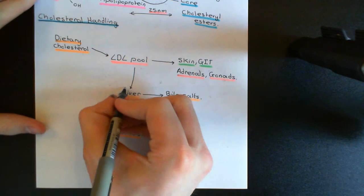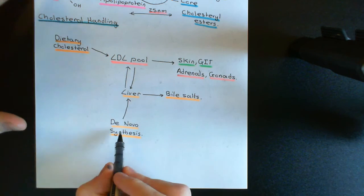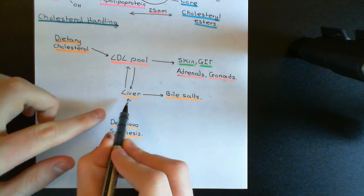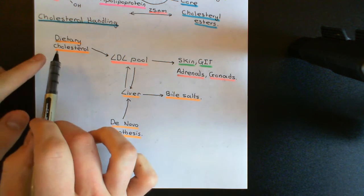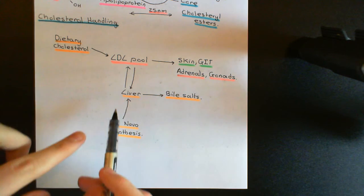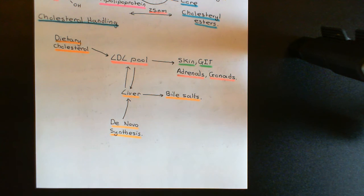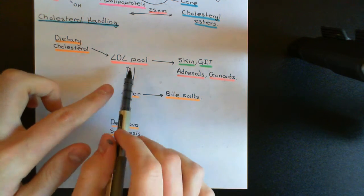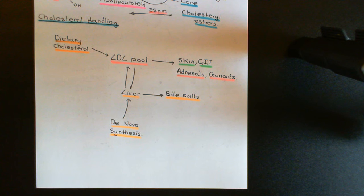The liver can also actually end up putting cholesterol back into the LDL pool. The liver can synthesize cholesterol by de novo synthesis and then put it into the LDL pool. If, for instance, the dietary supply of cholesterol is far too low, the liver can actually produce cholesterol to put into the LDL pool — providing the cholesterol that the skin, gastrointestinal tract, adrenals, and gonads need. That's why I have the liver on a separate portion of the diagram — it has arrows going both ways potentially.